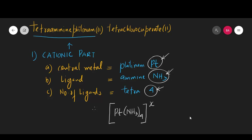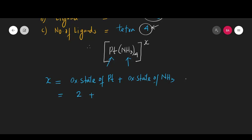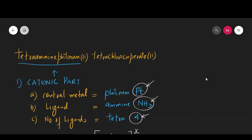This complex will have some positive charge x. We know x equals the oxidation state of platinum plus the oxidation state of ammonia multiplied by the number of times it appears. The oxidation state of platinum, as given in the name, is plus 2, and ammonia is a neutral species so its oxidation state is zero. Therefore x equals plus 2, and the formula of the cationic part is [Pt(NH₃)₄]²⁺.